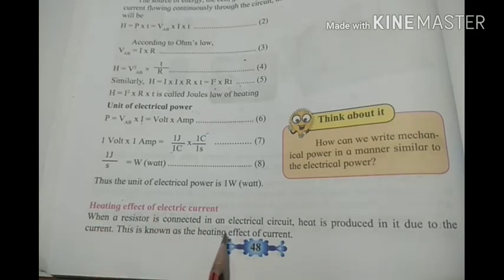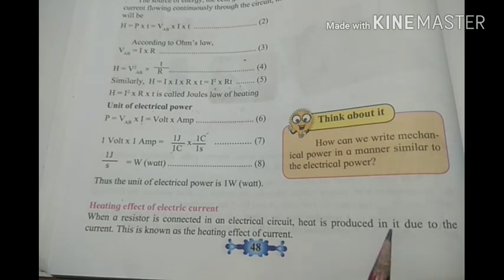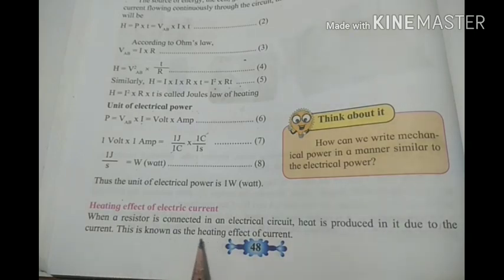When a resistor is connected in an electric circuit, the heat is produced in it due to the current. This is known as the heating effect of a current.